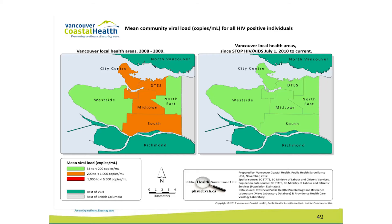To visualize community viral load by neighborhood: historically, a fair number of neighborhoods had mean community viral load suggesting not full viral suppression. Since the launch of Stop activities, we now see a lot more areas suggesting fairly good viral suppression across our neighborhoods. That's the monitoring-level report, available online on VCH with detailed explanations and definitions of each indicator we monitor regularly.